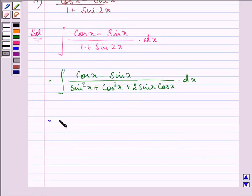Further, we have cos x minus sin x. Now here, if you observe, we have a square plus b square plus 2ab.